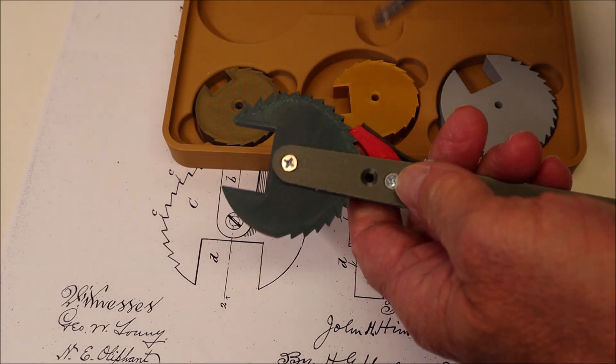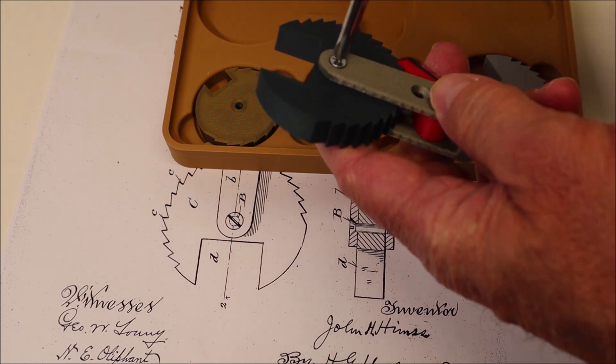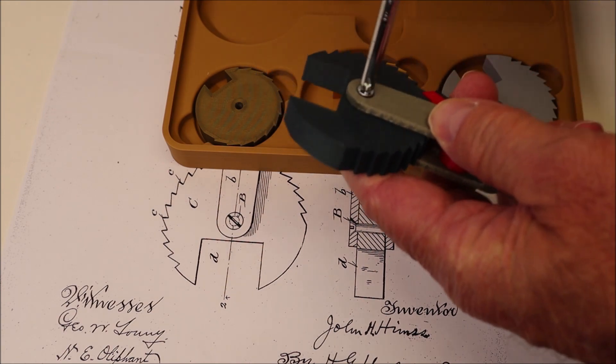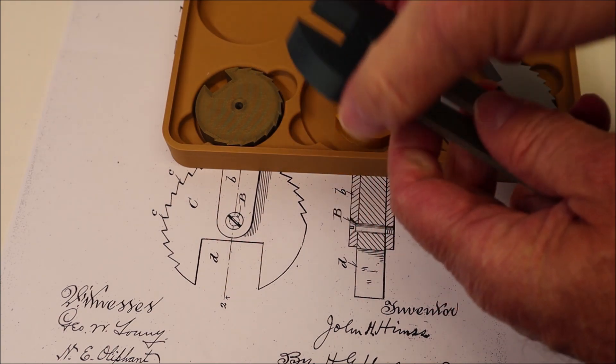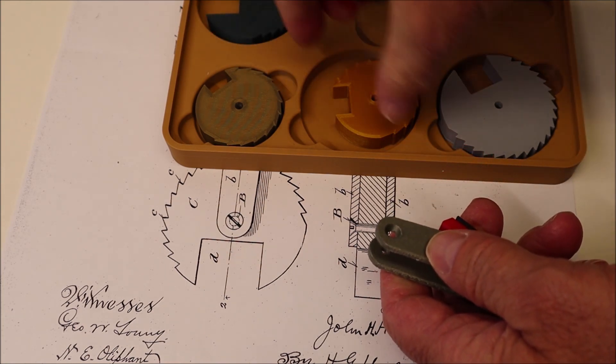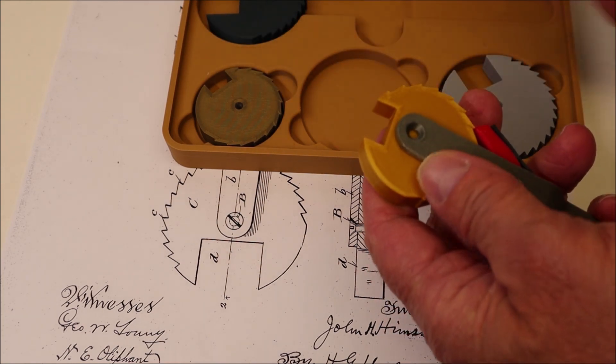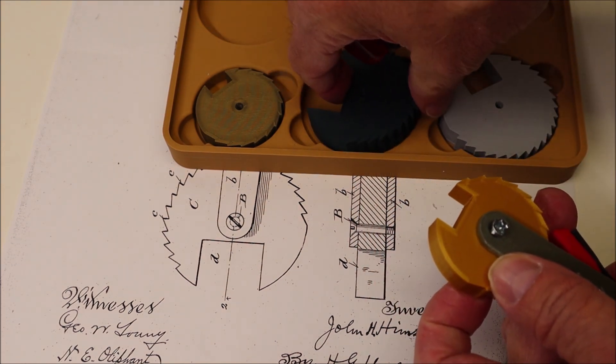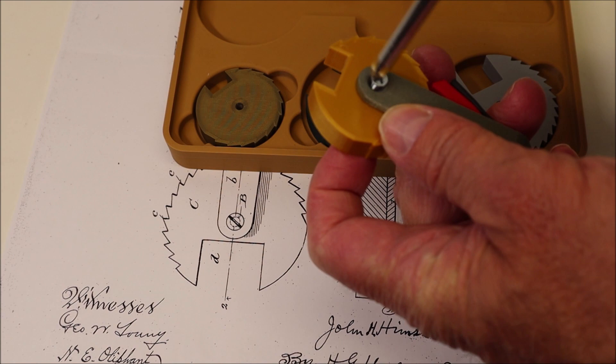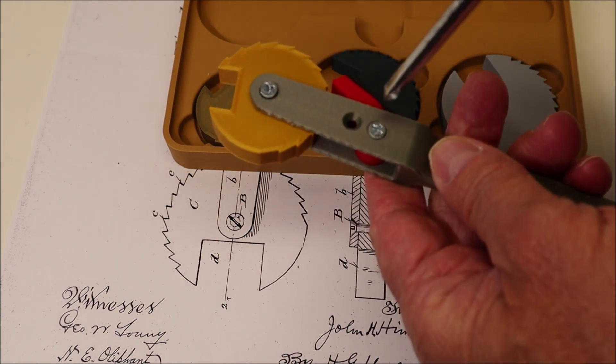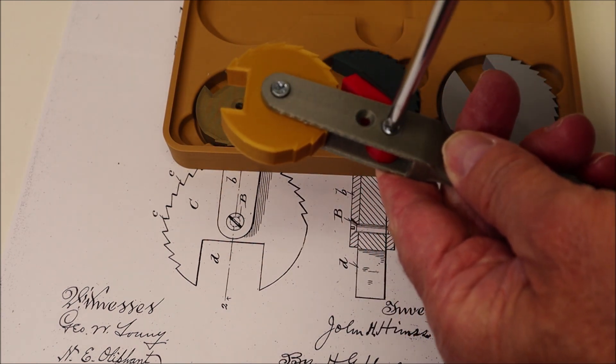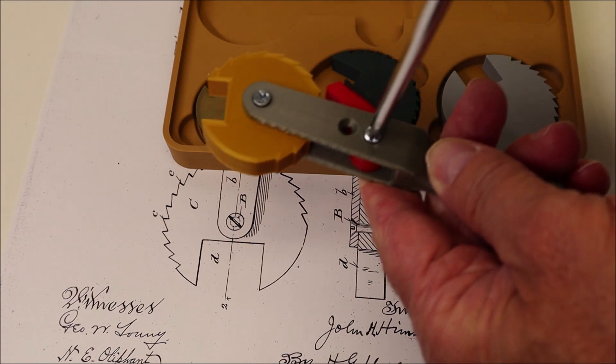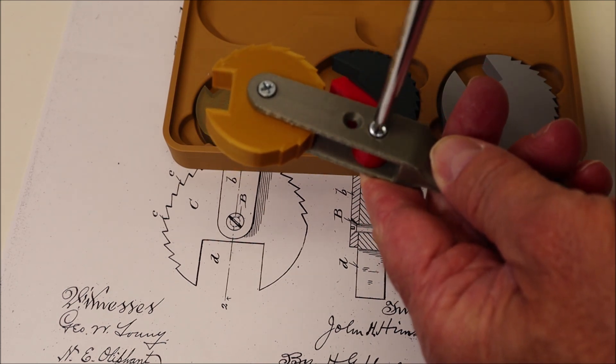So I'll replace one of the discs with the smaller one so you can see how that would work. And then you would just take this screw out and move this pawl up ahead to this position.